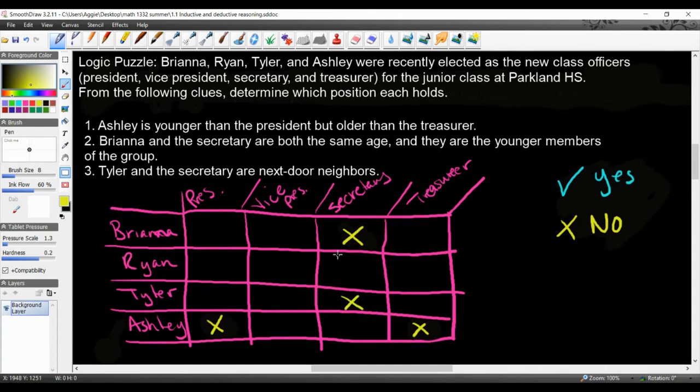So what this does is it narrows down the position that these four students might be. Now we're going to use our deductive reasoning based on this information to help us figure out at least one of them. And once we figure out one, we can deduce who the next one is and so forth. So here's how it works. I know that Ashley is younger than the president and older than the treasurer, so she's older than at least one person. So let's look at clue number two. Brianna and the secretary are both the same age. So let's look at the secretary for a moment. The secretary is either going to be Ryan or it's going to be Ashley.